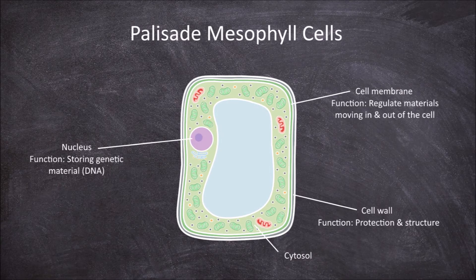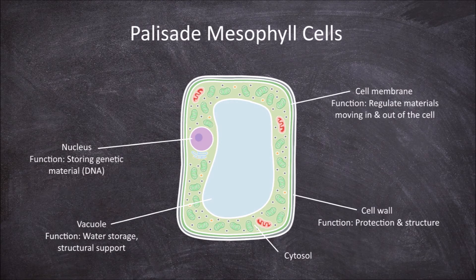The first organelle is the large vacuole. The vacuole is a large central storage organelle found in plant cells. The main functions of a vacuole are in storing water and in providing structural support due to the turgor pressure it provides within the cell.